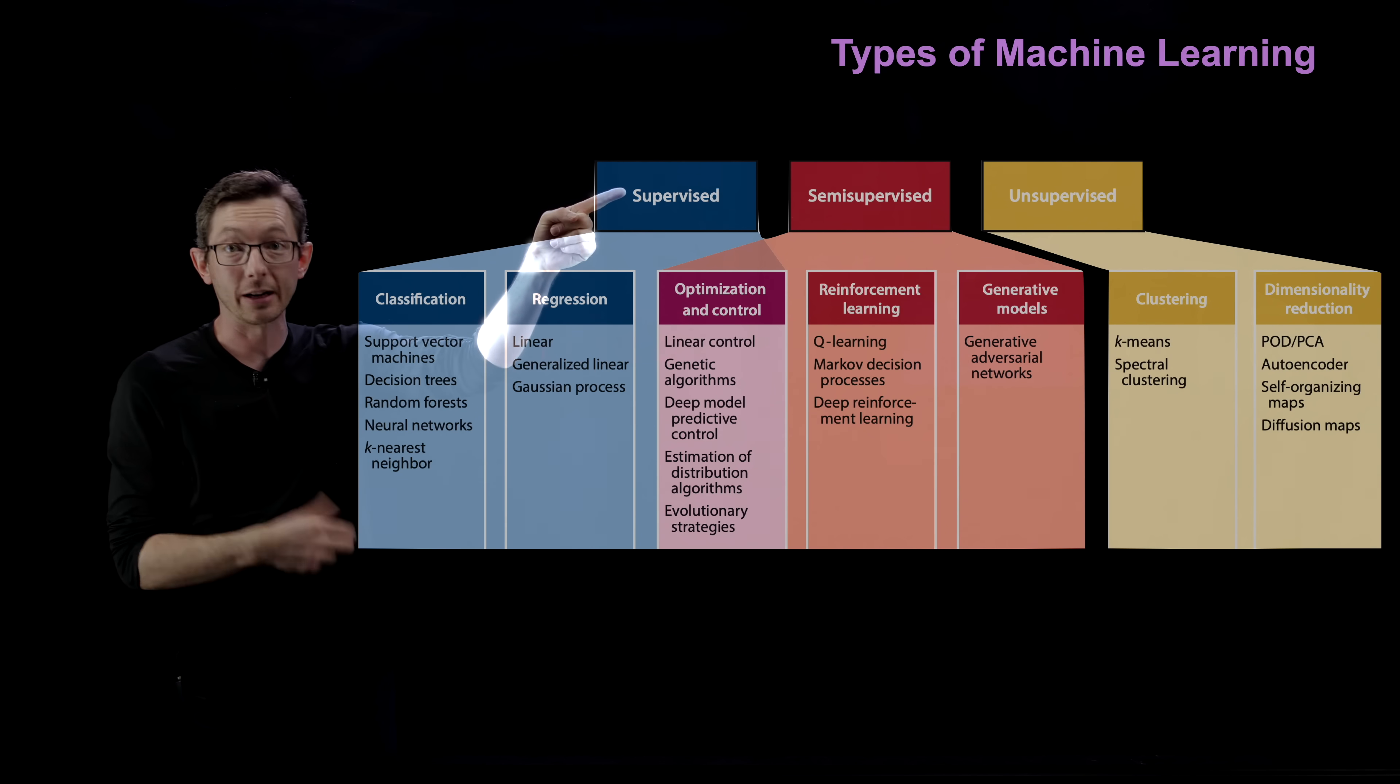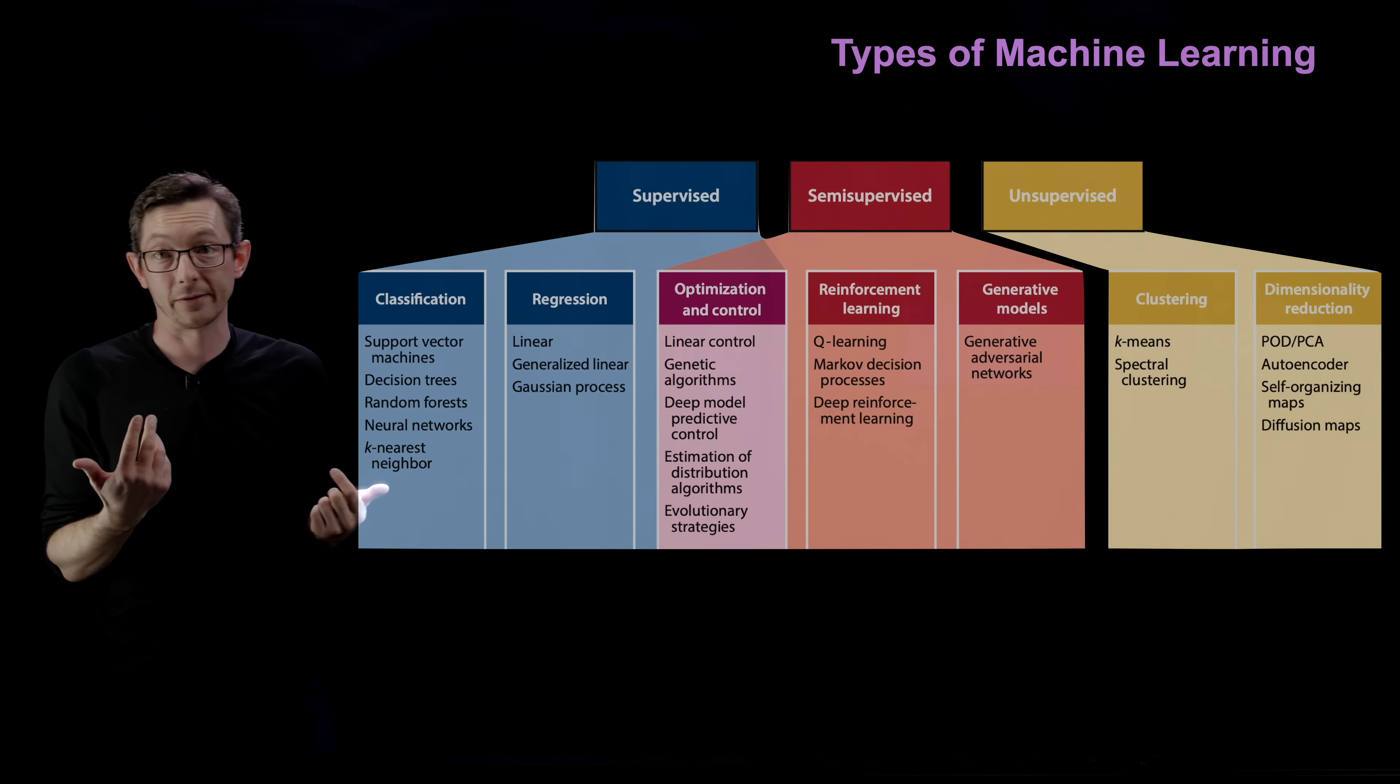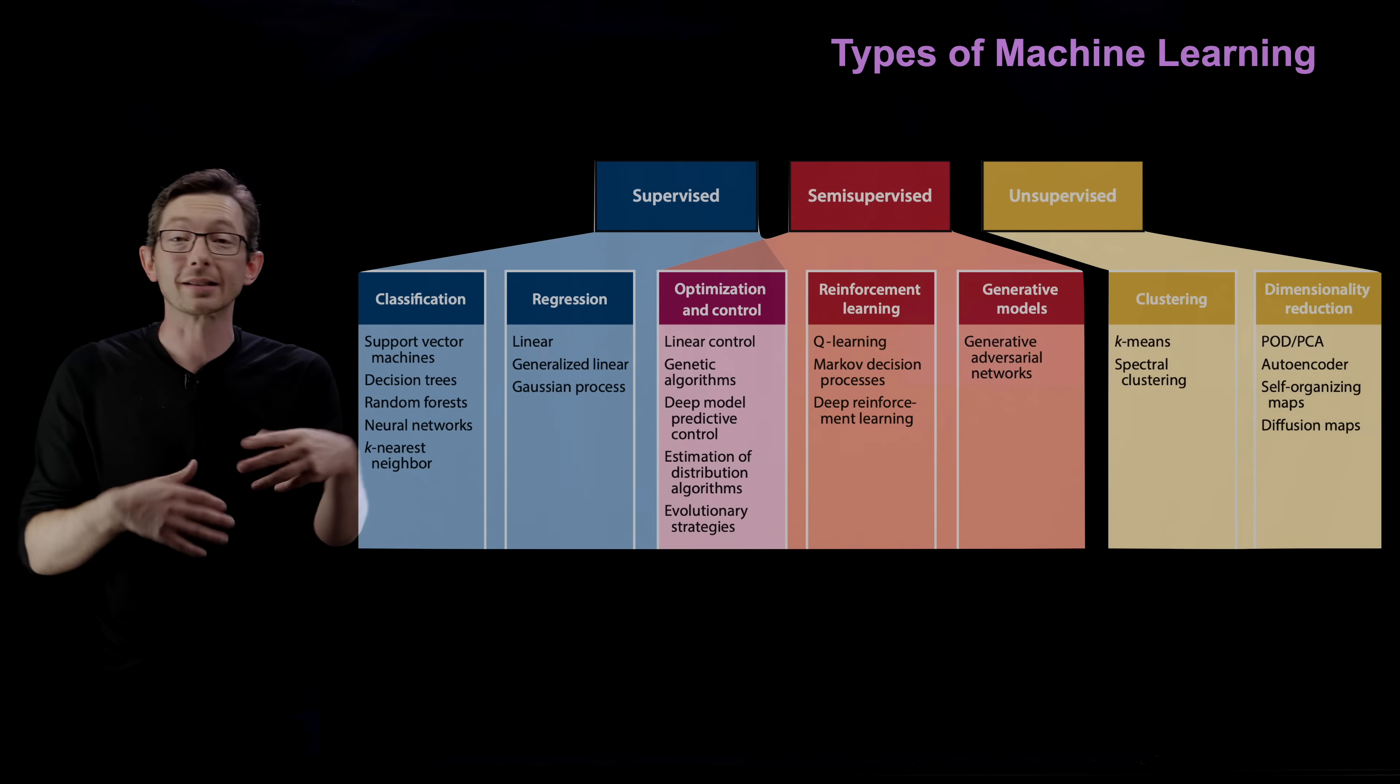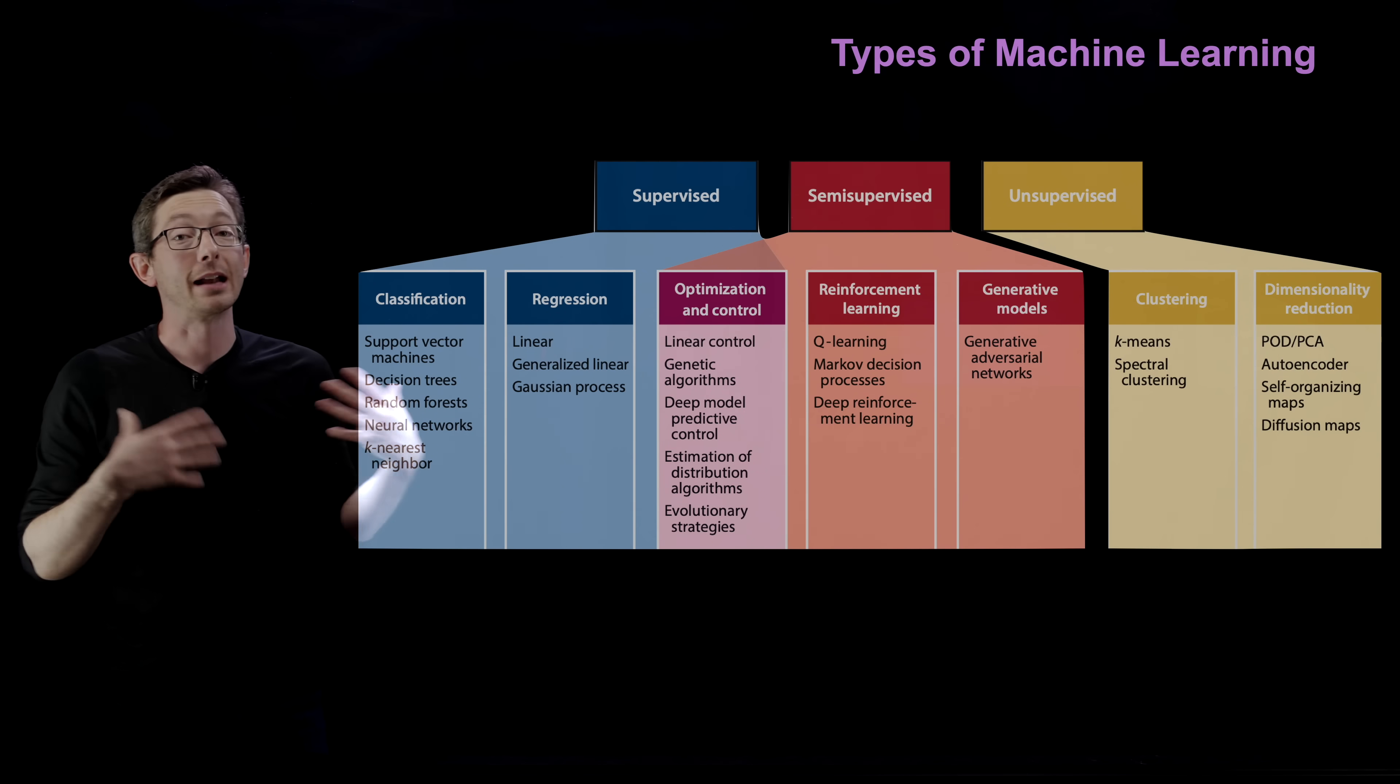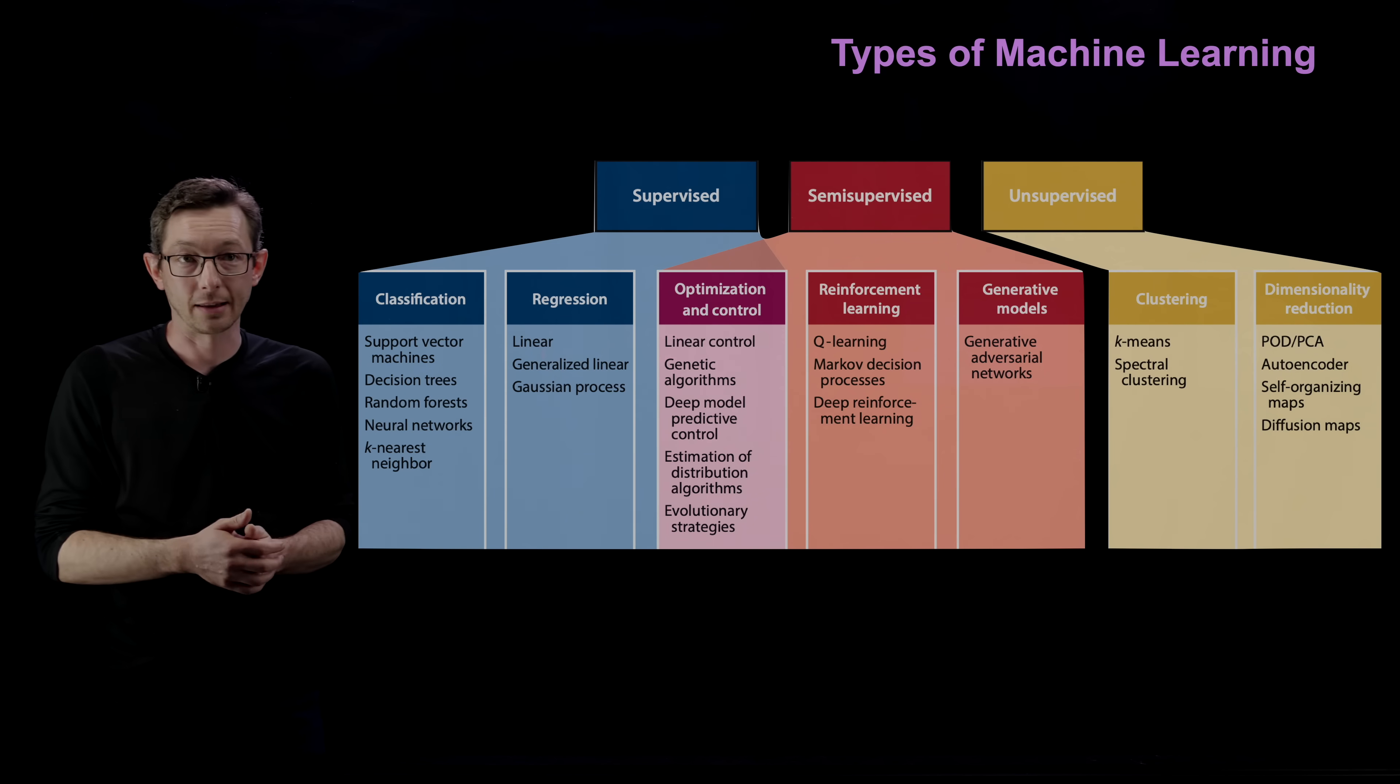Supervised learning has labels. And if I want to tell dogs and cats apart from labels, I would build a classifier. Lots of techniques to do that. Support vector machines, decision trees, random forests. Neural networks is a very powerful way we do this today. But there's lots of options depending on how much data you have, what types of data you have, how interpretable you want it to be.